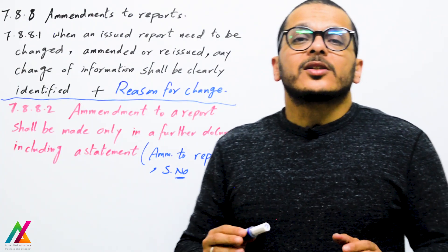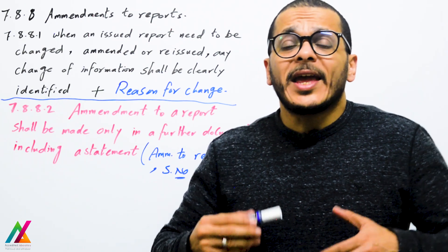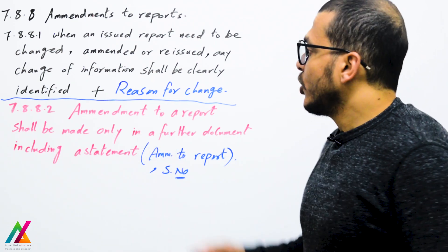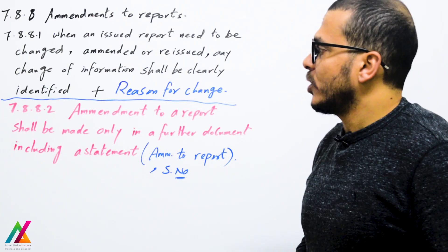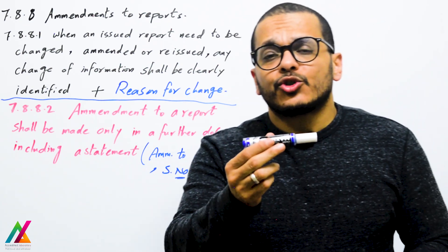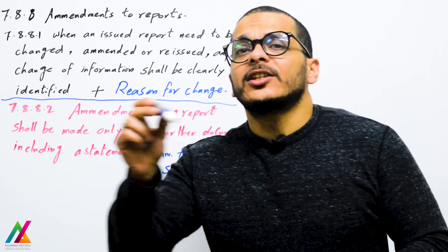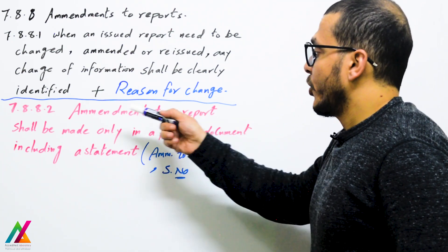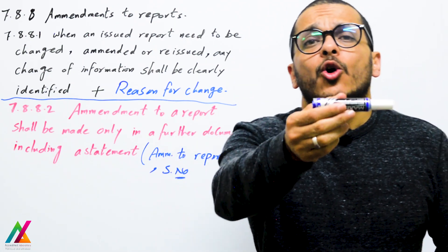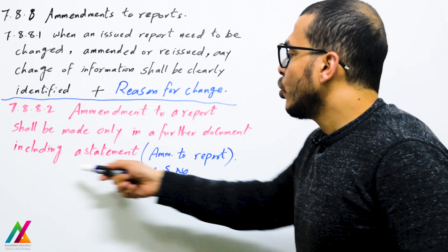The last point in reporting is amendment to reports — a very important topic. When an issued report needs to be changed, amended, or reissued, any change of information shall be clearly identified along with the reason for the change. However, an amendment to a report shall be made only in a further document — you cannot make all changes on the same report. The amendment document shall include all points that need changing, the reasons for change, and a statement reading 'amendment to report.'